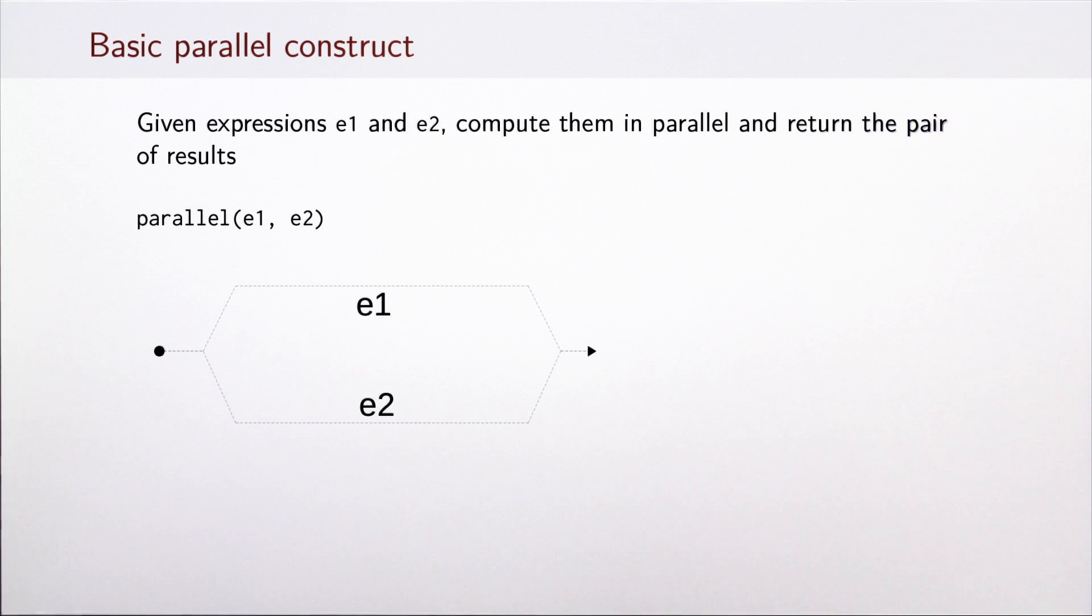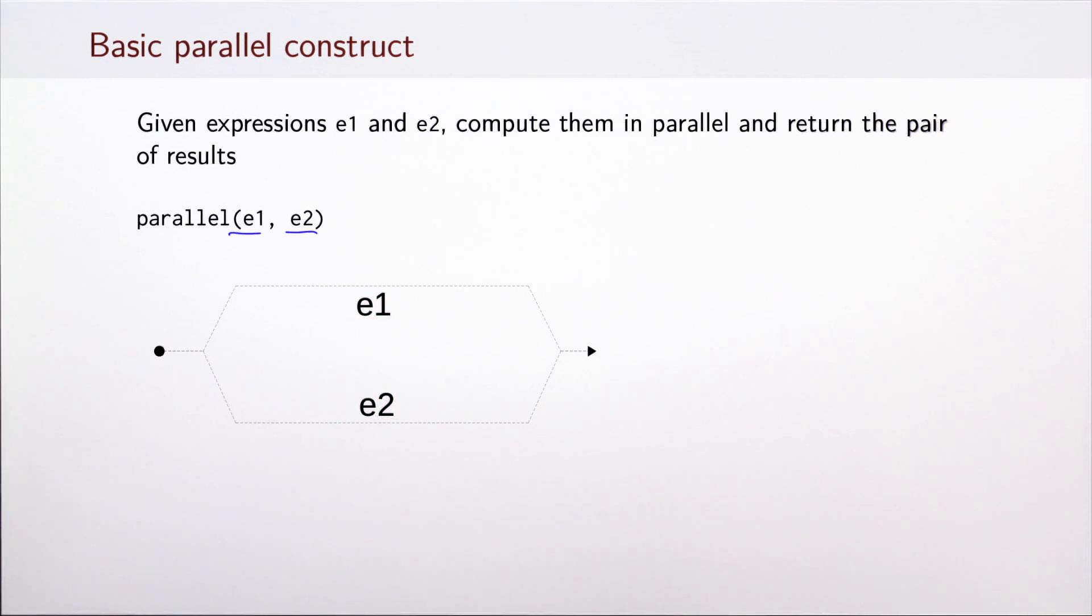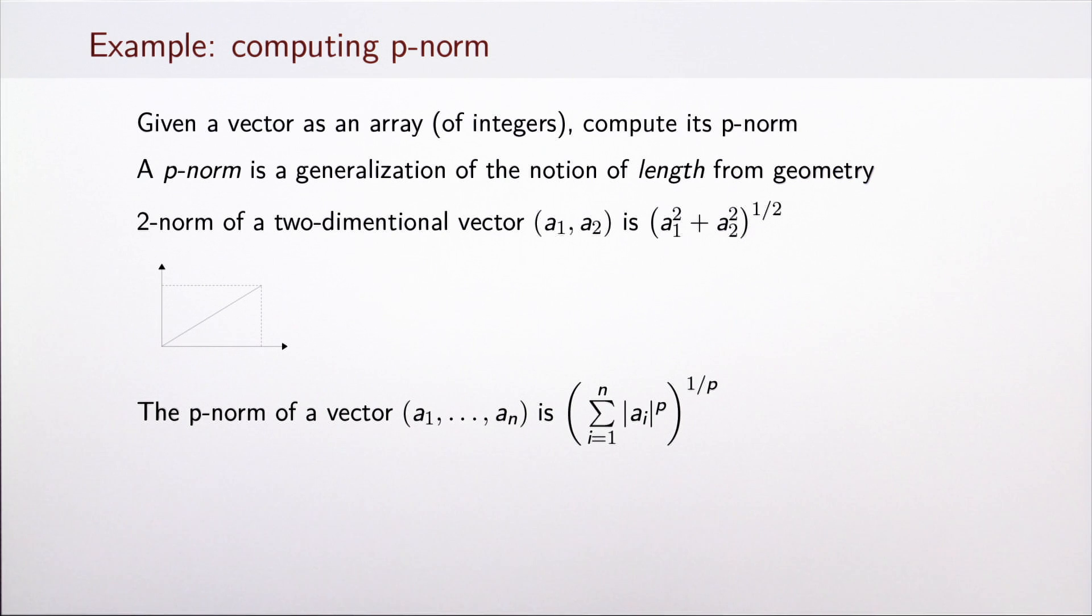What would be the simplest way to indicate that if we have two expressions e1 and e2, we wish to compute them in parallel? Let's consider a construct that simply takes two expressions and whose meaning is that these two expressions are evaluated at the same time.